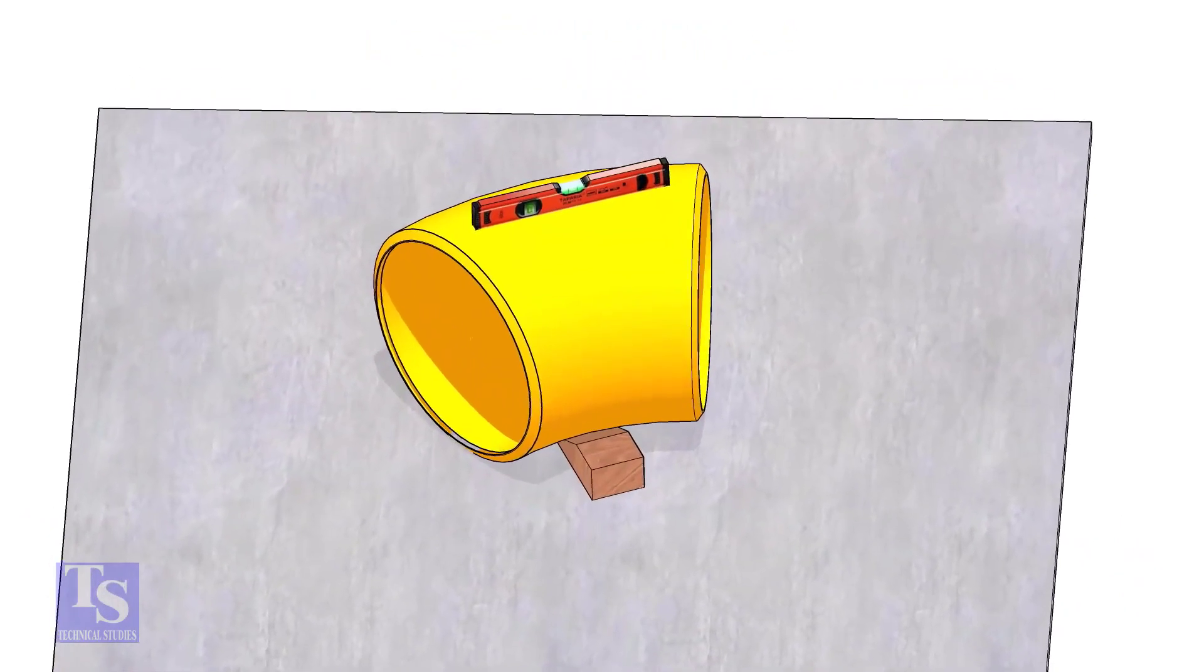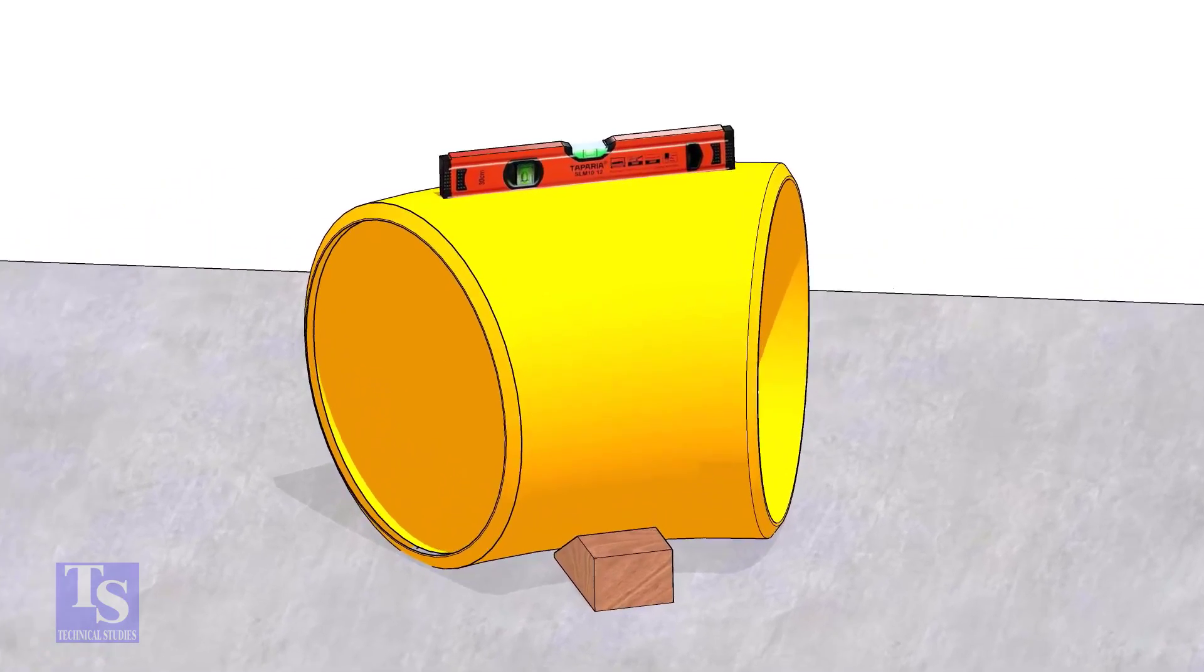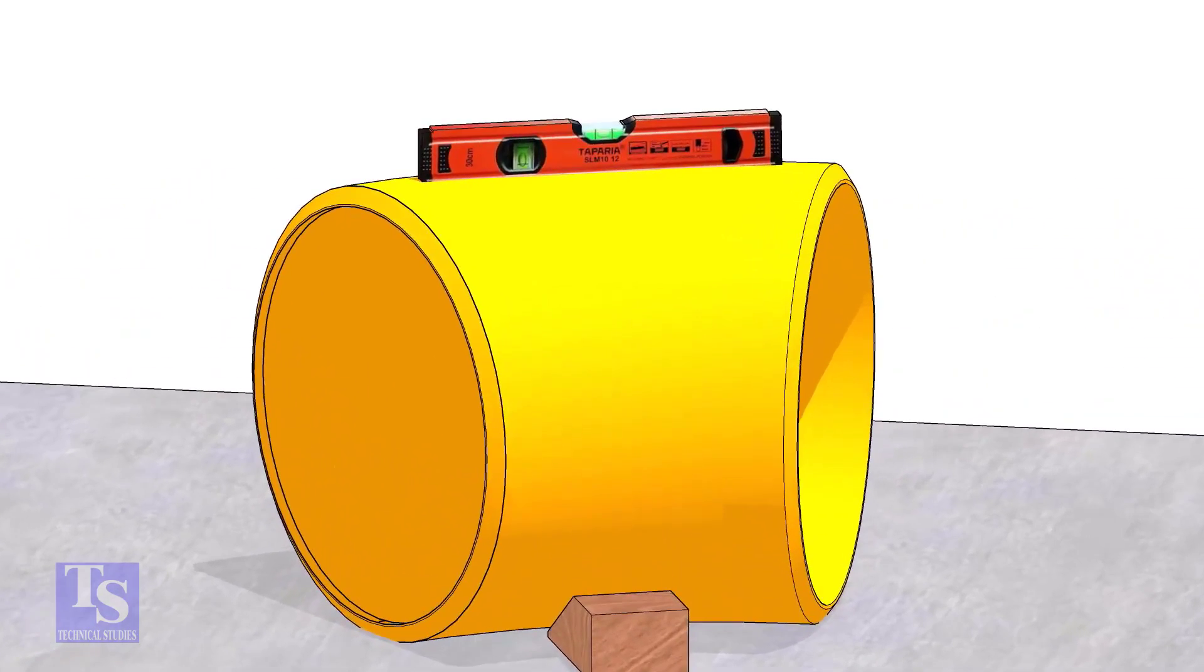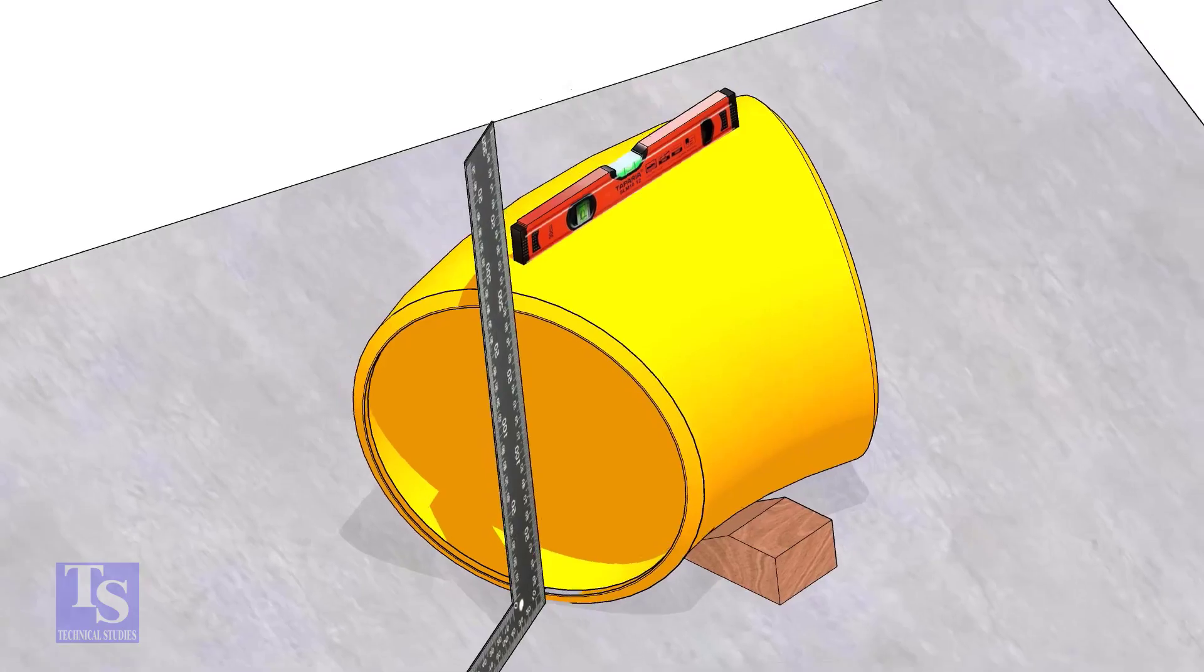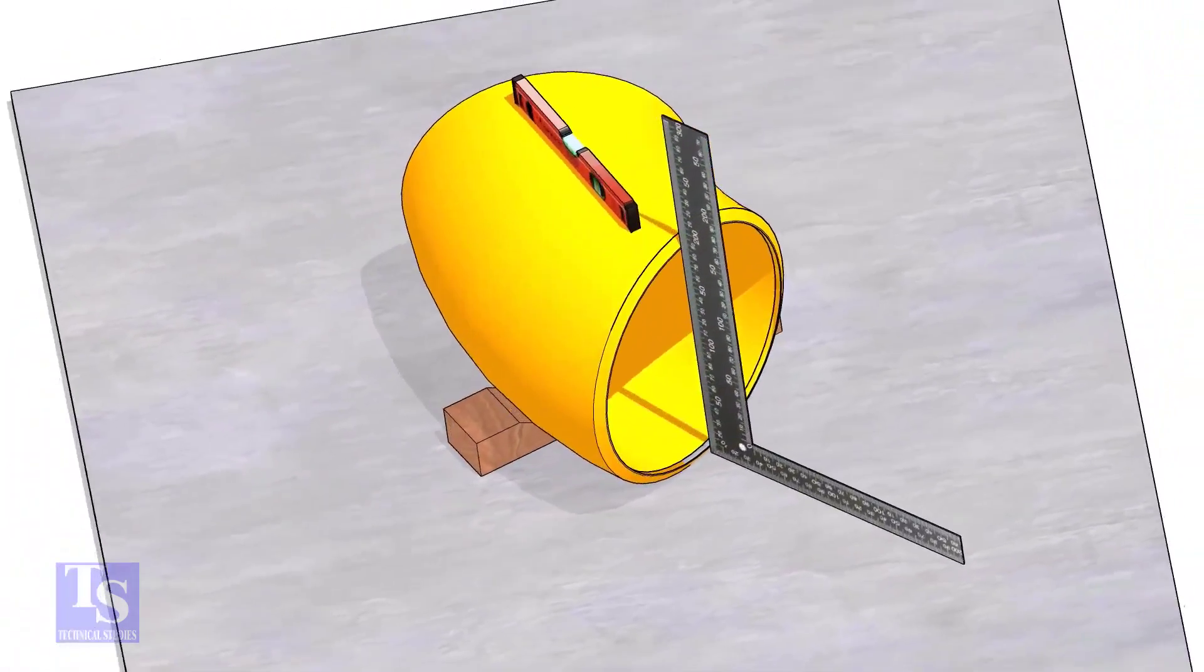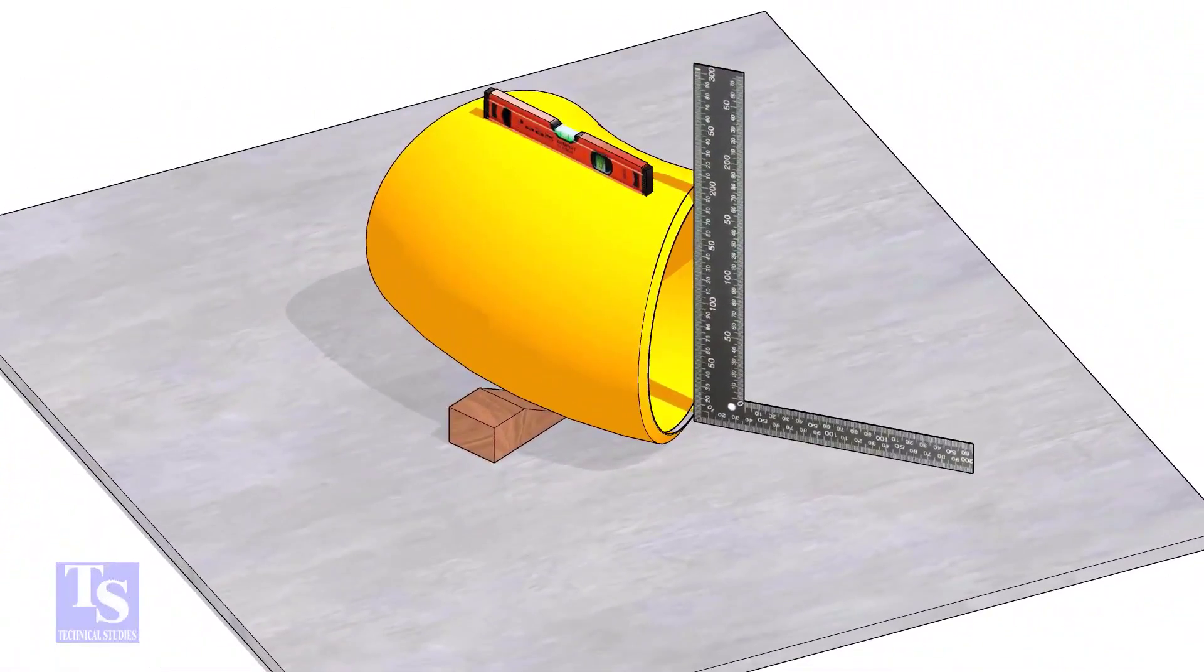Put one elbow on a straight plate. Check the top level. Make the faces of the elbow right angle to the plate. Put packing on both sides and fix the position of the elbow.